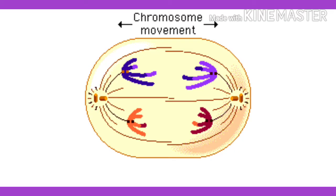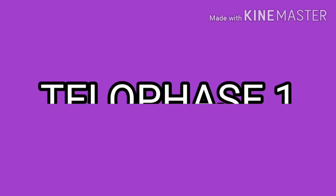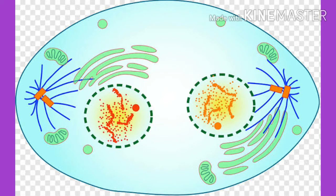Coming to anaphase 1: chiasmata separate. Chromosomes, each with two chromatids, move to separate poles. Anaphase 1 is characterized by segregation or disjunction of chromosomes. Division of the centromere is absent. Anaphase 1 is responsible for the reduction of chromosome number in daughter cells.